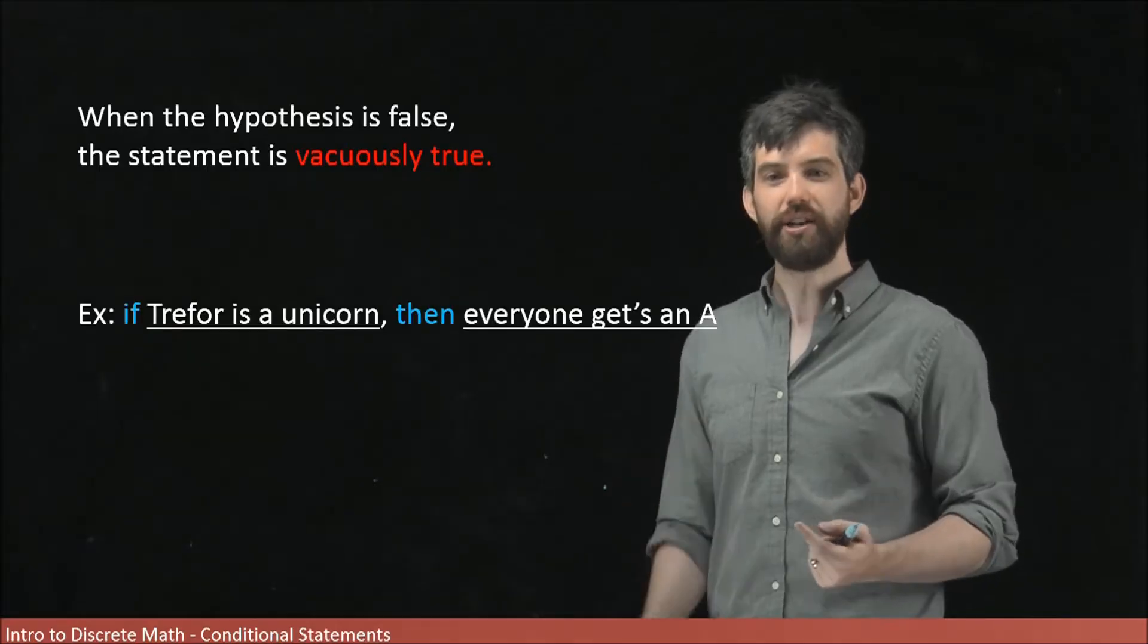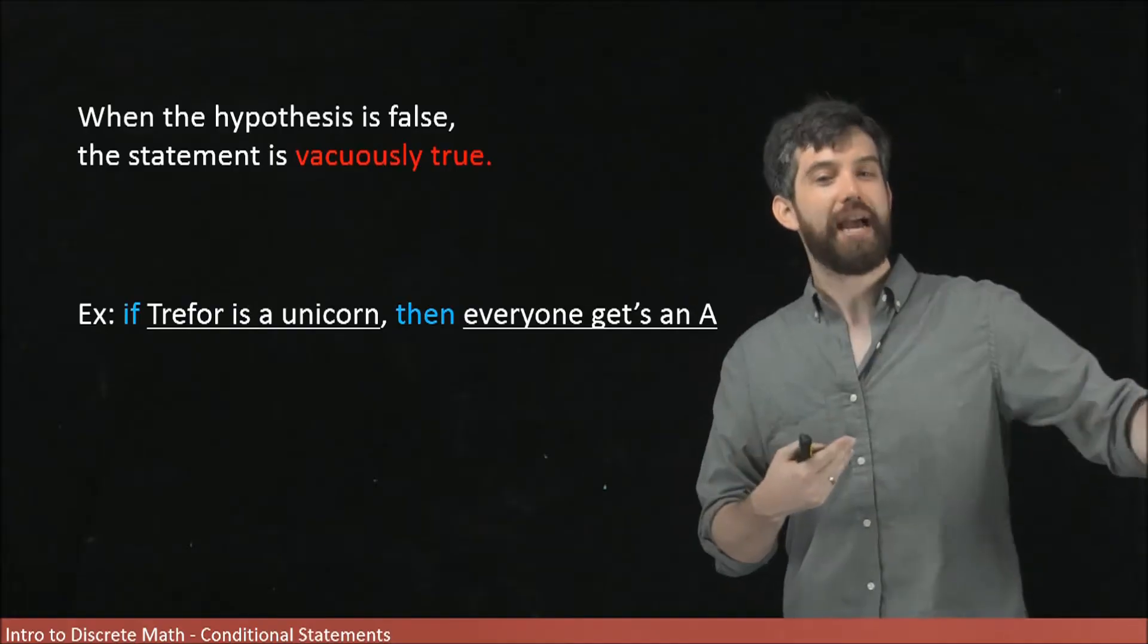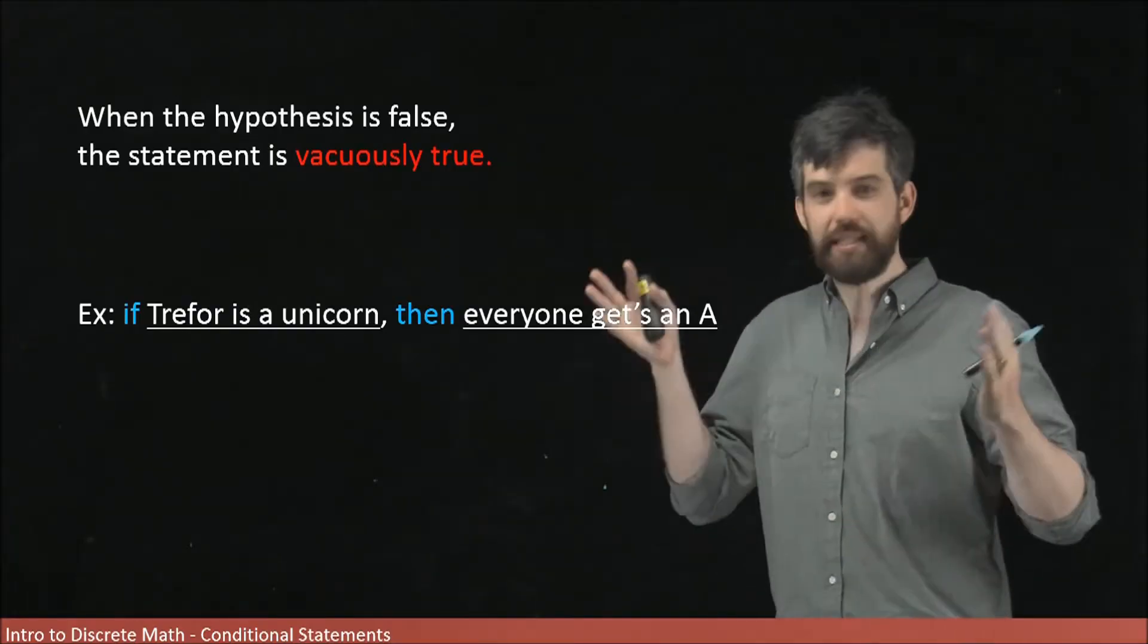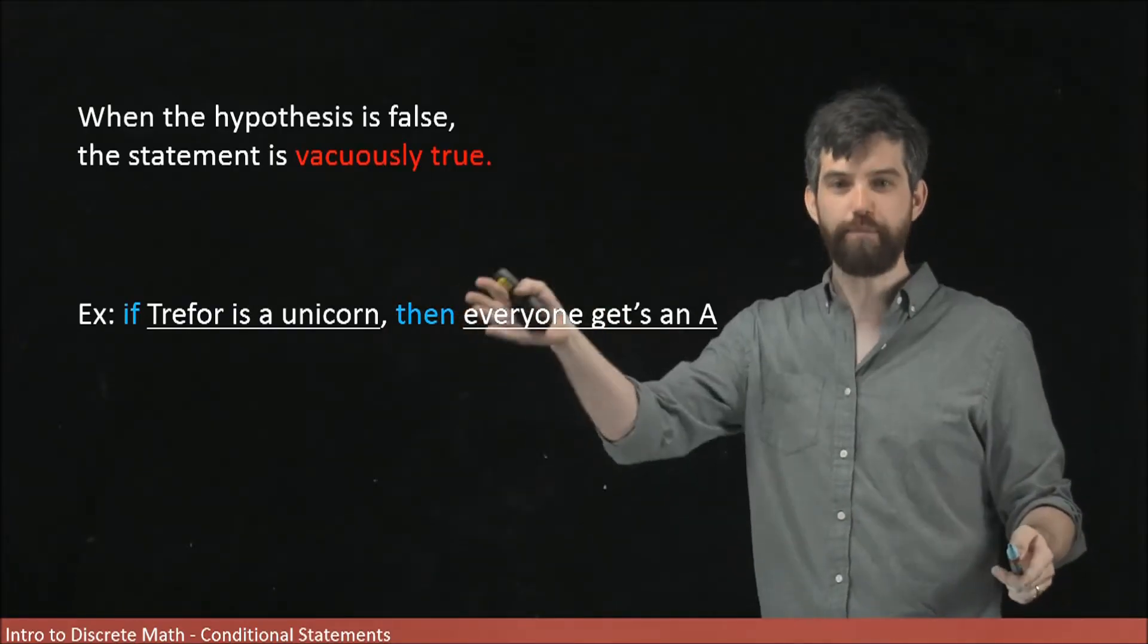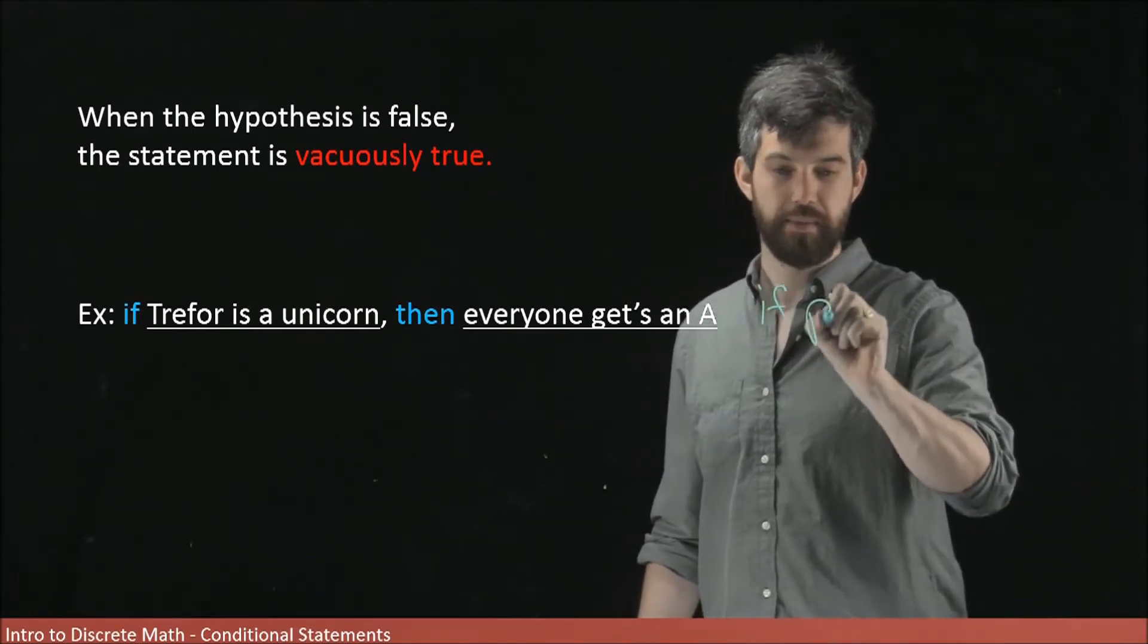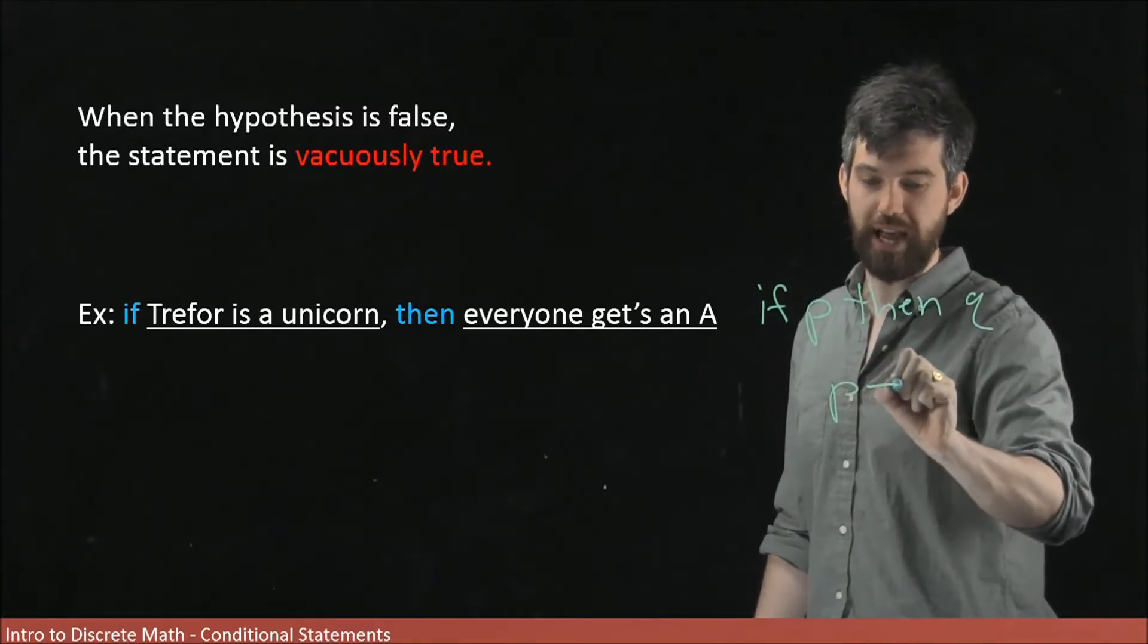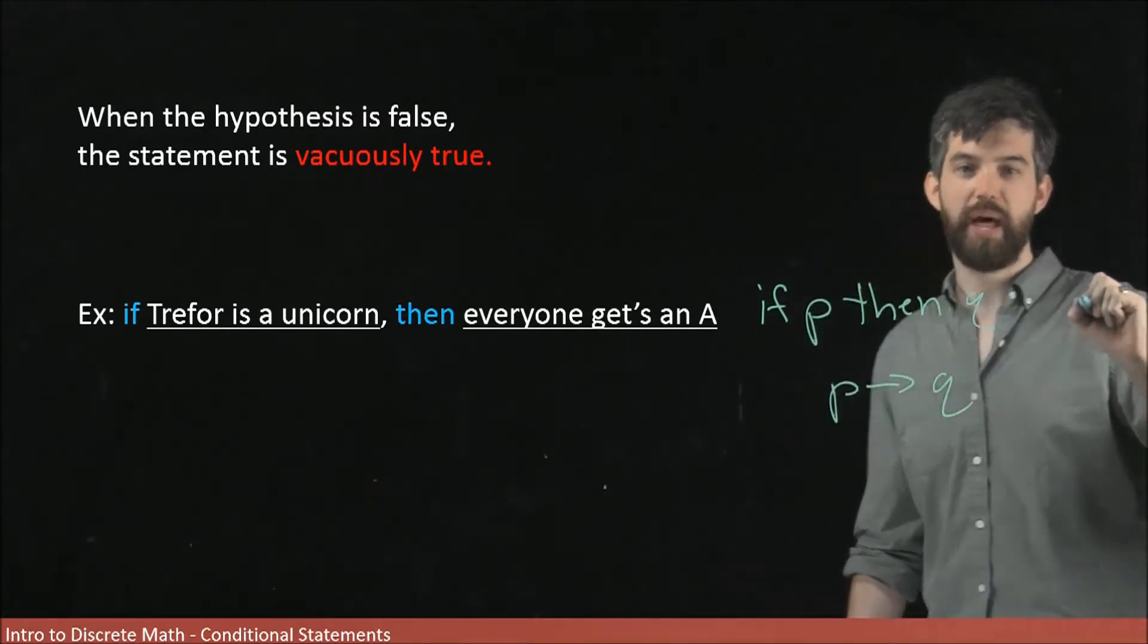So consider this statement. If Trevor is a unicorn, then everyone gets an A in the class. This is an if P, then Q statement. I can say this is an if P, then Q statement, or alternatively I can say it is a P implies Q statement.